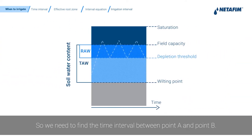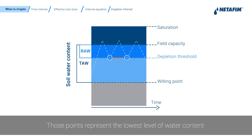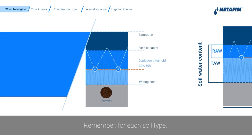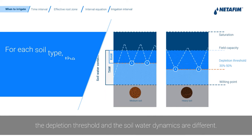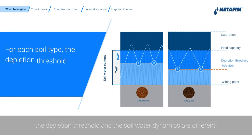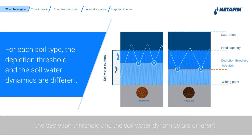So we need to find the time interval between point A and point B. Those points represent the lowest level of water content and are the trigger for another irrigation event. Remember, for each soil type, the depletion threshold and the soil water dynamics are different.